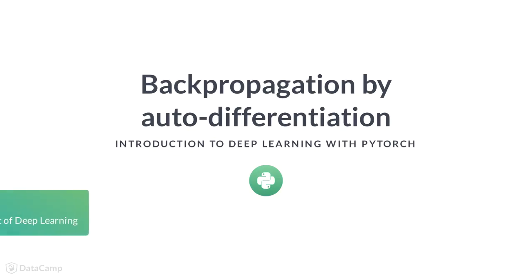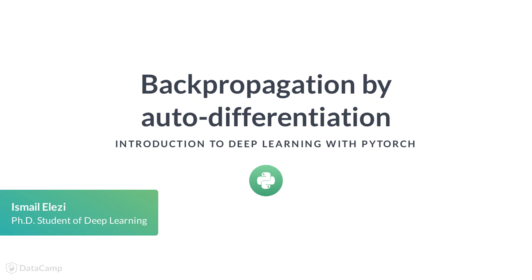In this lesson, we are going to introduce the main algorithm in neural networks, the so-called backpropagation algorithm, and see how we can use it on PyTorch. This lesson is a bit more theoretical than most of the lessons in the course, but there is no need to get scared of that.